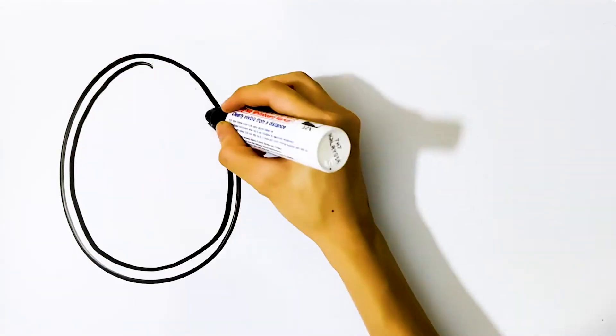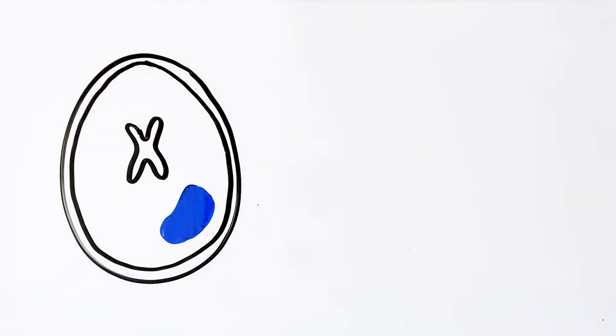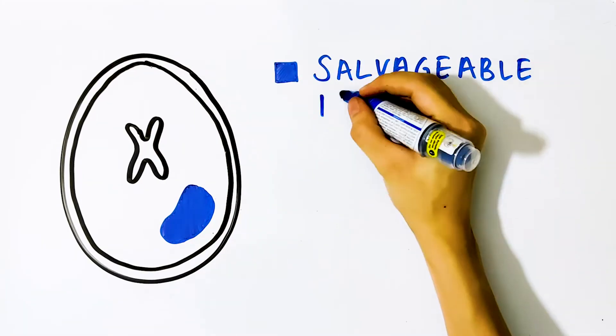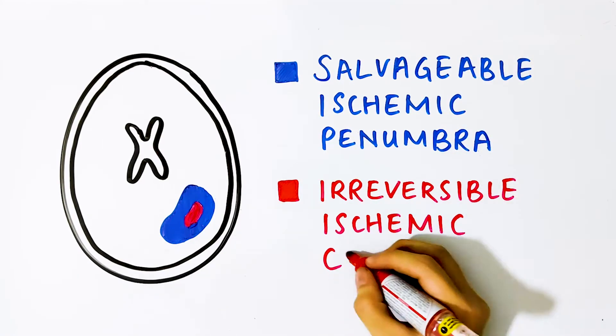The aim of ischemic stroke therapy is to salvage tissue that is at risk of infarction but can still be saved through recanalization strategies. This salvageable tissue is known as the ischemic penumbra and is different from the irreversible ischemic core.